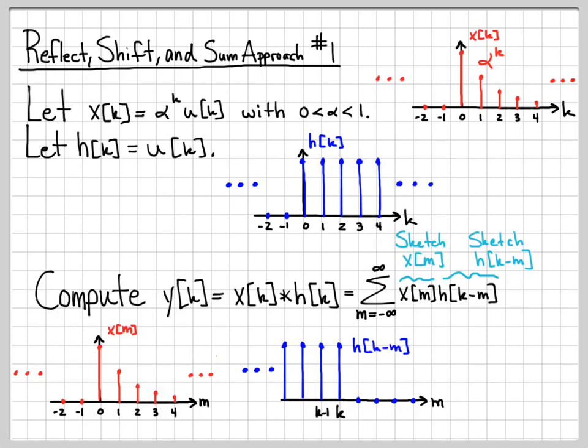By flipping it, I flipped it to turn on at time minus infinity and turn off at 0. And then when I shift it by the amount k, it no longer turns off at time 0. It turns off at time k. So this is what h[k-m] looks like. So I have these two pieces sketched.